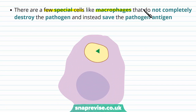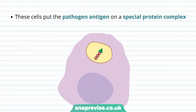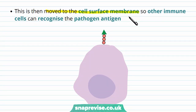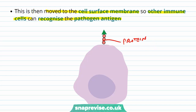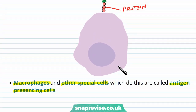Some special cells like macrophages do not completely destroy the pathogen — they save some of the pathogen's antigen. Most of the pathogen is broken down so the harm it can do is lost, but they keep the antigen in its natural structure. What these cells do with this antigen is put it onto a special protein complex, join it to this special protein, and then move it to the cell's surface membrane — presenting the antigen to other cells so other immune cells can recognize the pathogen's antigen. It's kind of waving a flag saying I've eaten a pathogen and this is the antigen it has. So macrophages and other special cells able to do this are called antigen-presenting cells.